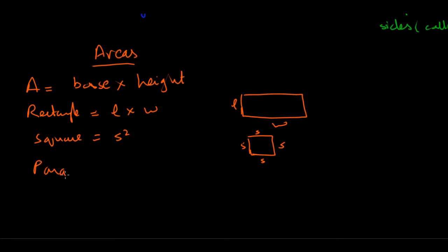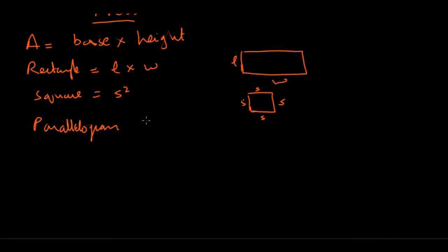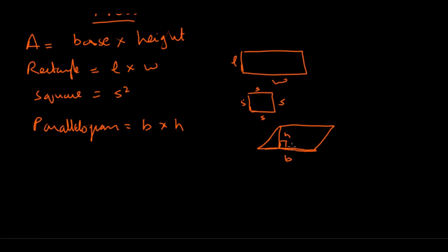For a parallelogram it gets slightly trickier because base and height are not immediately evident. If you take the bottom side as the base, the height is drawn from one vertex perpendicular to the base — that altitude makes a 90-degree angle. Base times height gives you the area. To find the height you need to know other things like the angles inside the parallelogram.